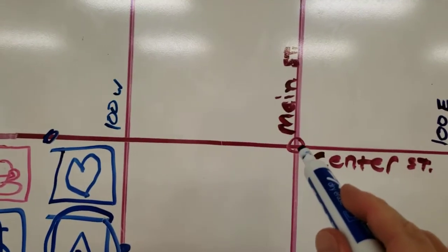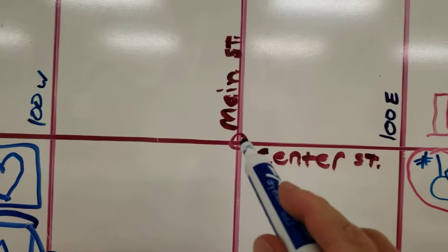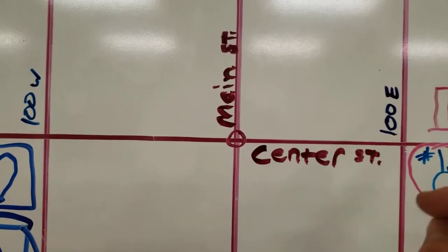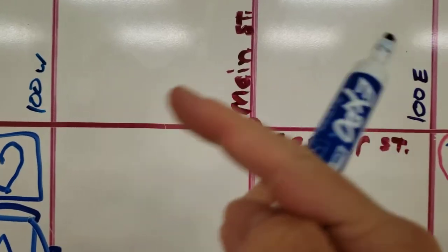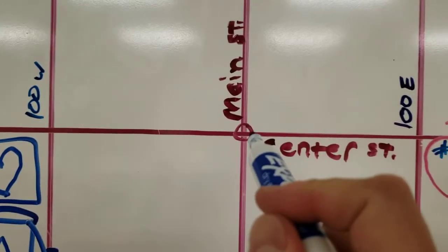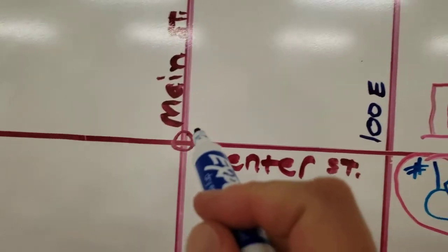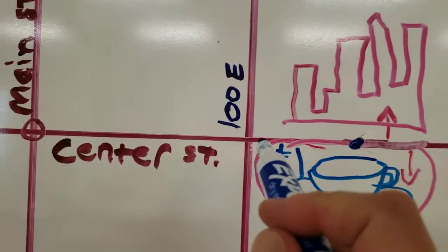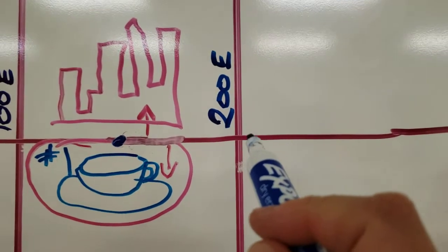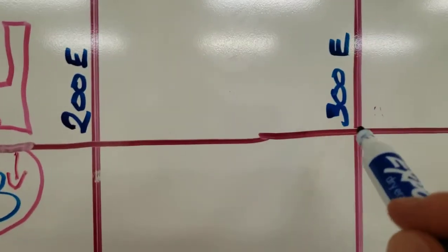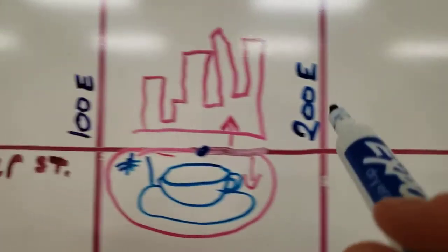So, where it says 150 East, that means we need to go East, right? That way, instead of West. So, we need to go 150 to the East. One block is 100 East. Two blocks is 200 East. Three blocks is 300 East, and so on. But we just need 150.